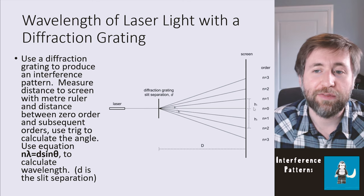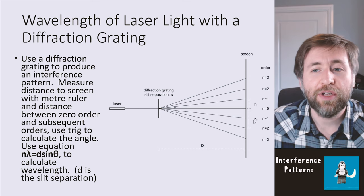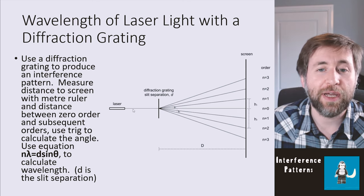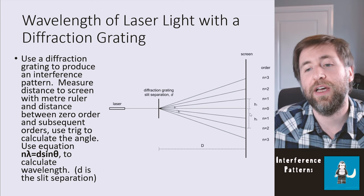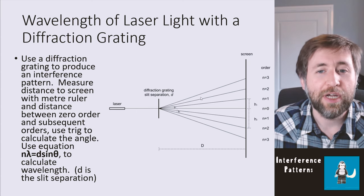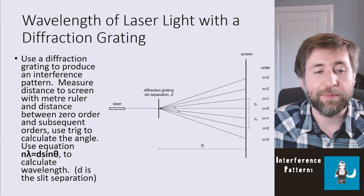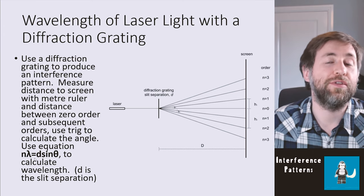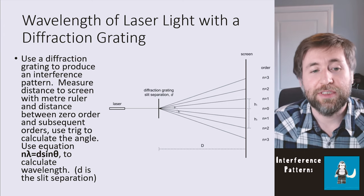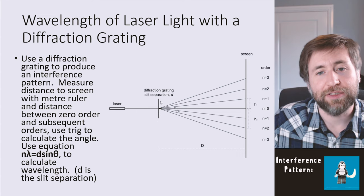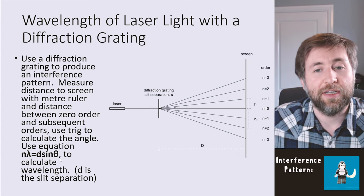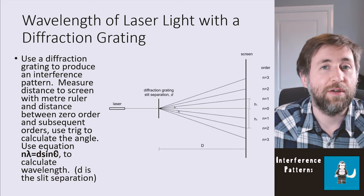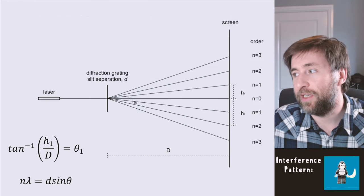Then use the distances h1 and h2 — from the zeroth order to the first, second, and third order maxima — to work out a series of angles. Then apply the equation: n lambda equals d sin theta, where lambda is the target wavelength, d is the slit separation given on the diffraction grating, and theta is the angle worked out using trigonometry.